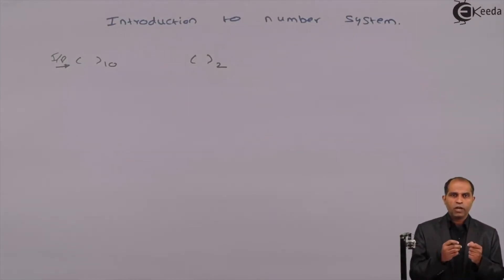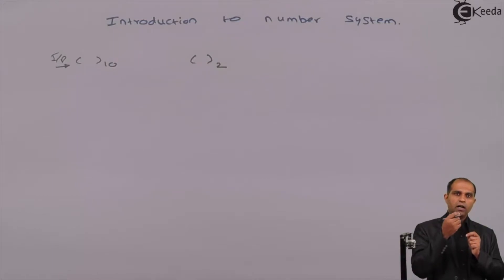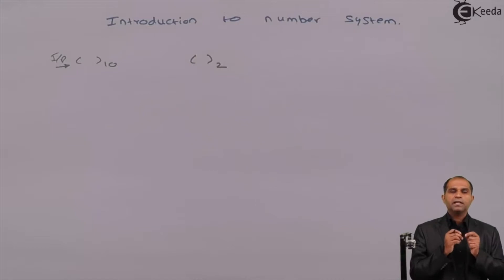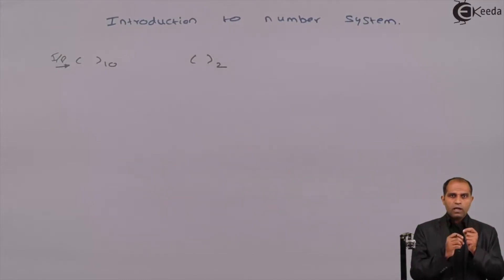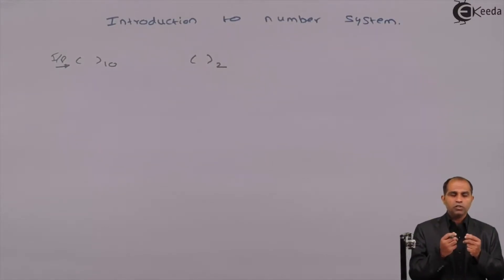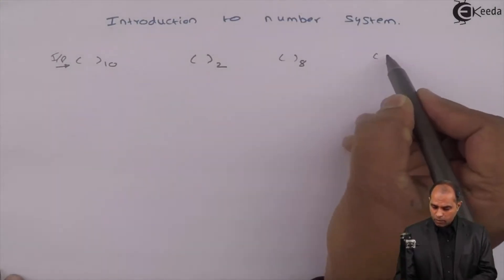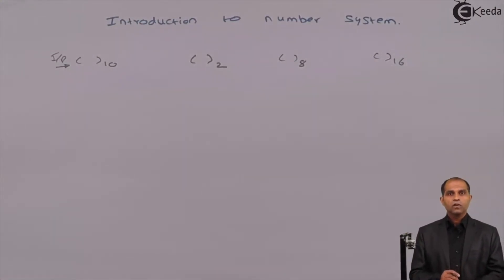Suppose if I enter a value of 12, do not expect the system to access it as 12. When you type 1 and 2 from the keyboard, you might see the input appearing as 1 and 2 on screen, but it is not exactly 1 and 2. It is the values 1 1 0 0, which is the binary equivalent of 12. We also have other systems called octal, which is base 8, and hexadecimal, which is base 16.